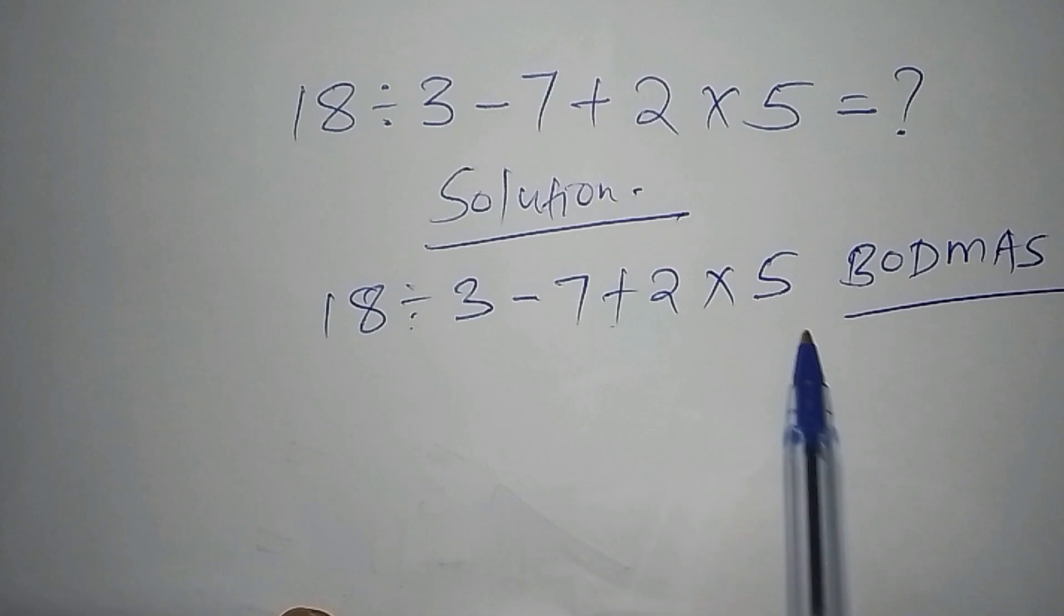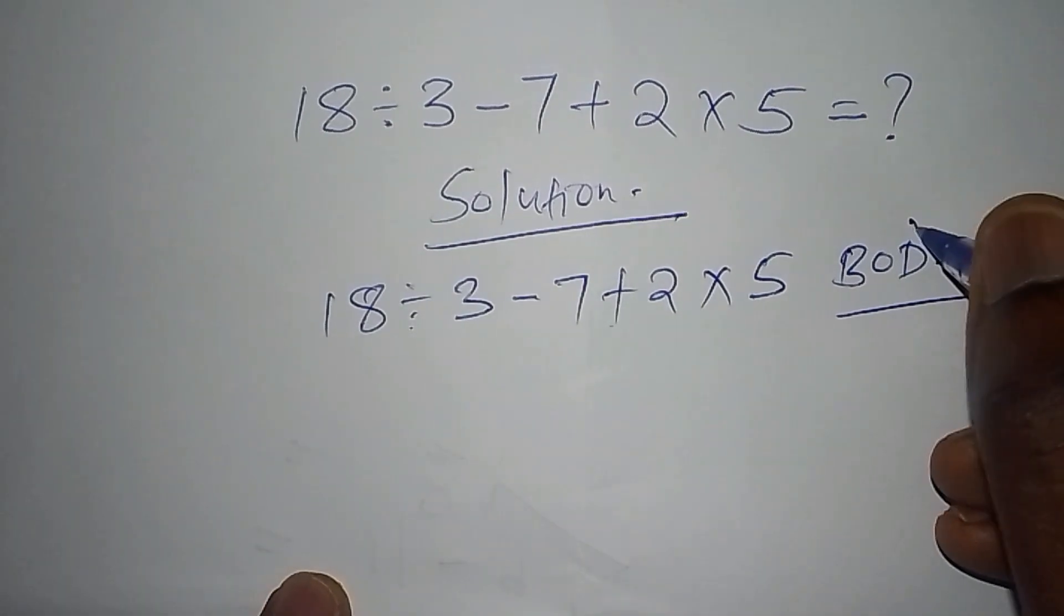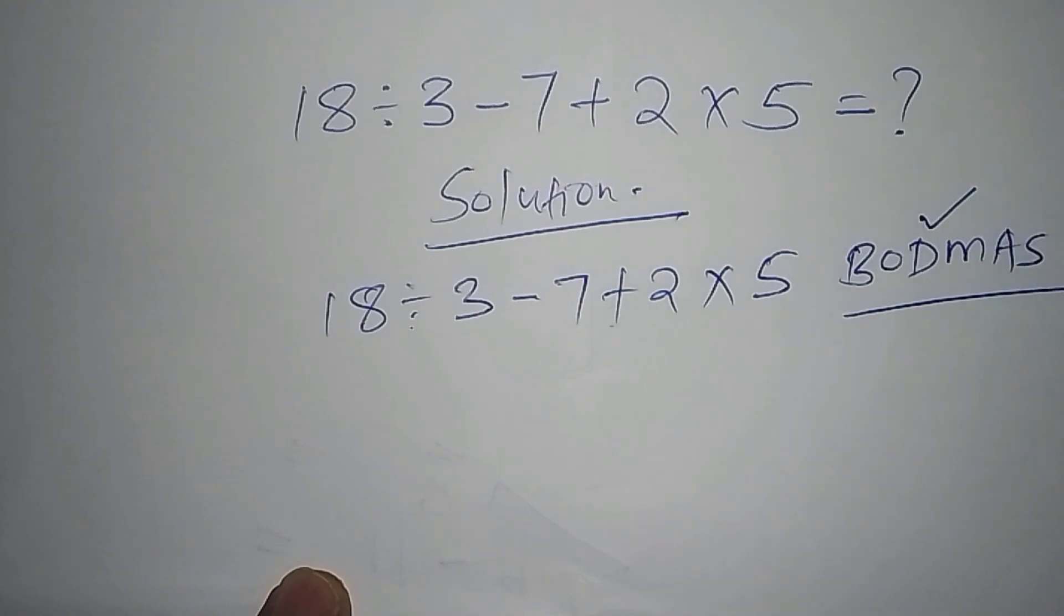So we're going to start with the division. The division stands for D. So here we shall have 18 divided by 3, we shall have 6. So 6 minus 7 plus 2 multiply by 5.